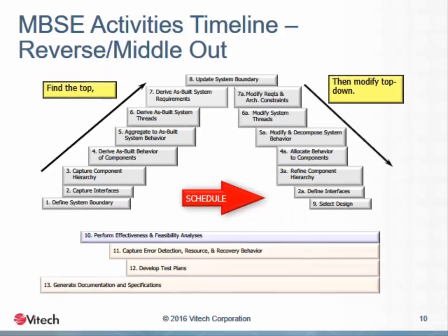In the case of reverse engineering, system modification, or improvement, the process must of course begin with an as-is system which exists in full detail. In these cases — known as reverse or middle-out engineering — the process calls for moving from the existing system to a high level of abstraction, and then advancing the design as in a top-down or clean sheet process.